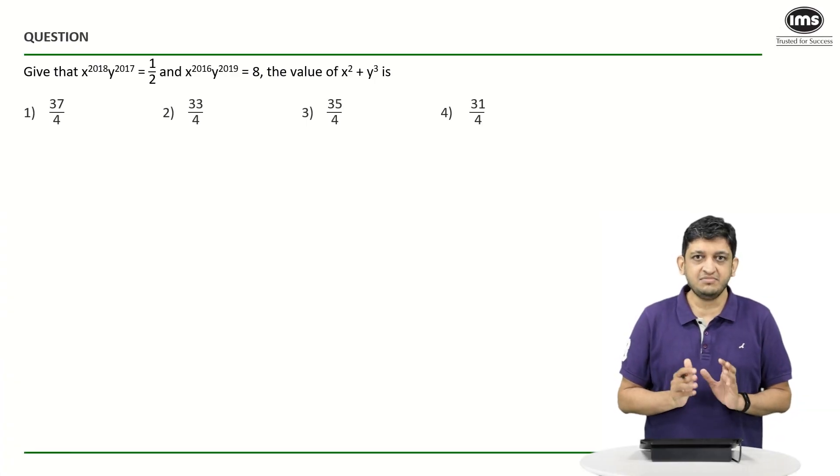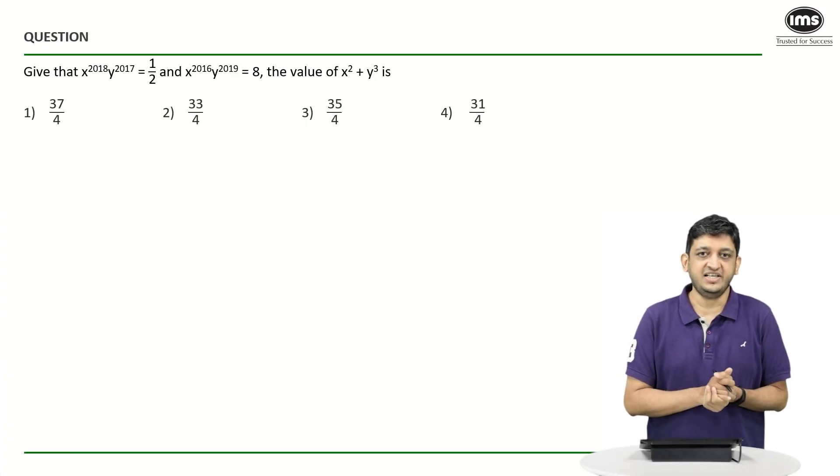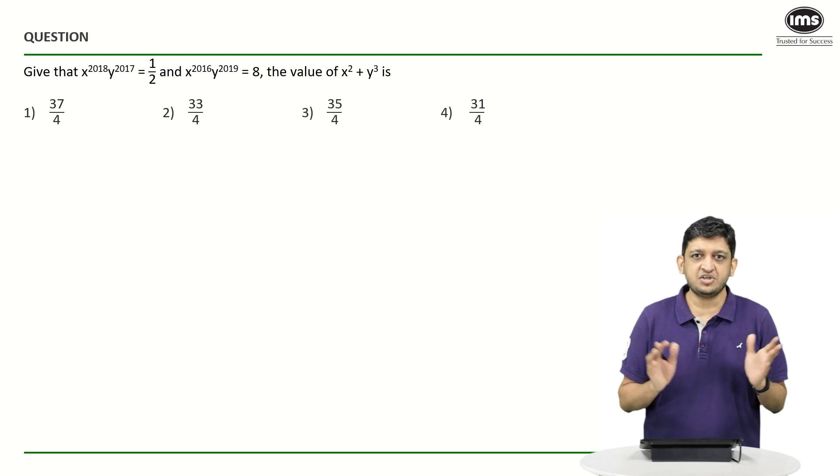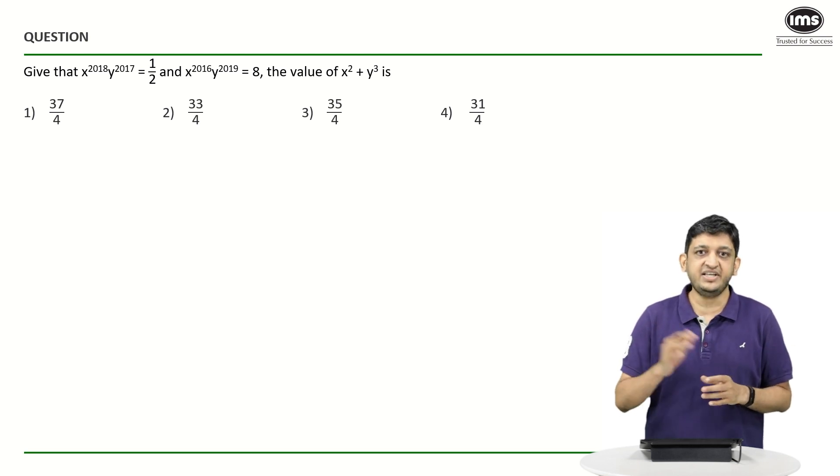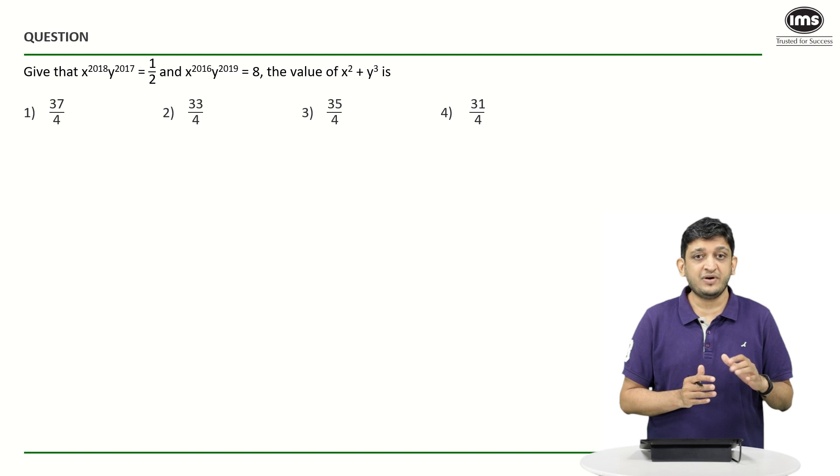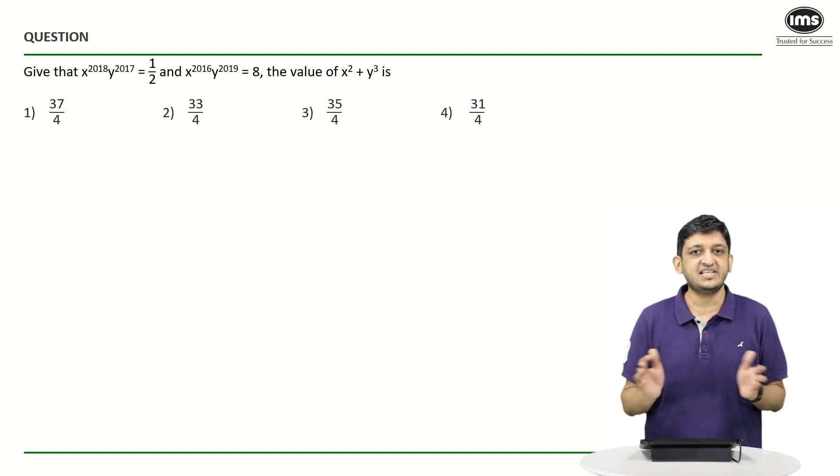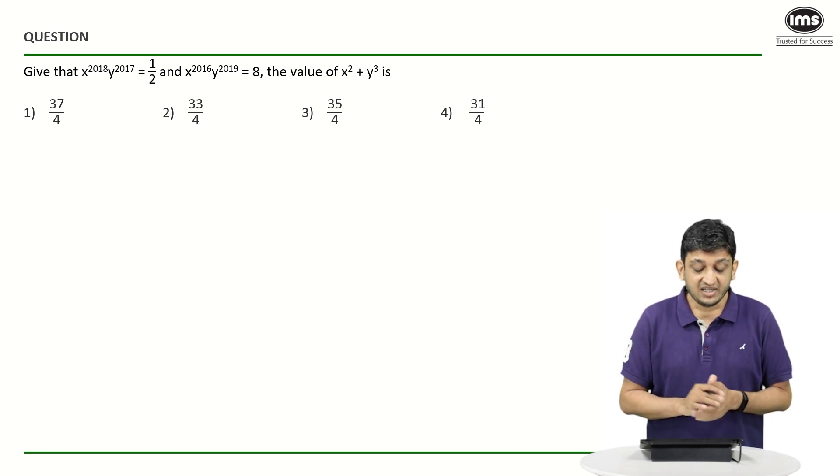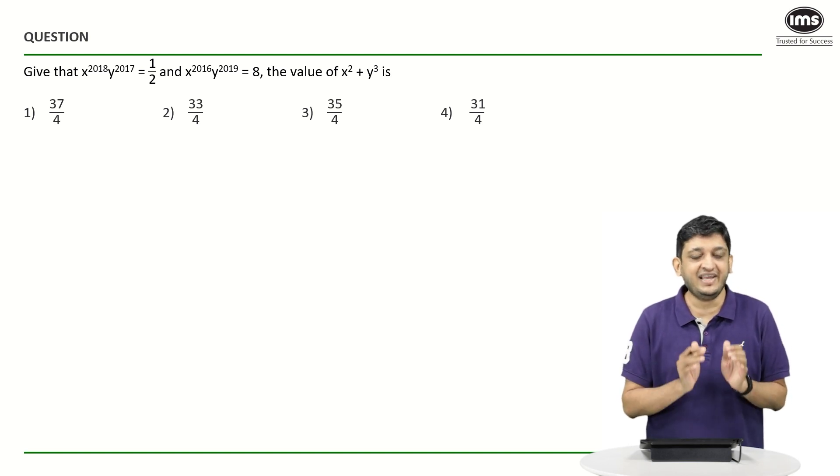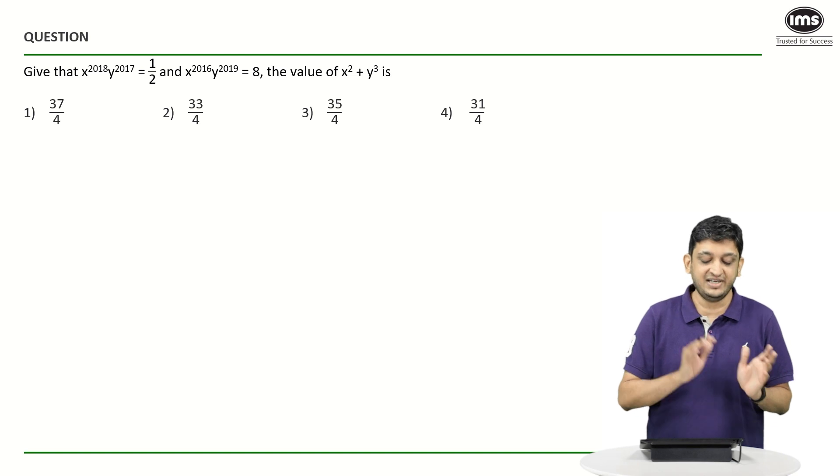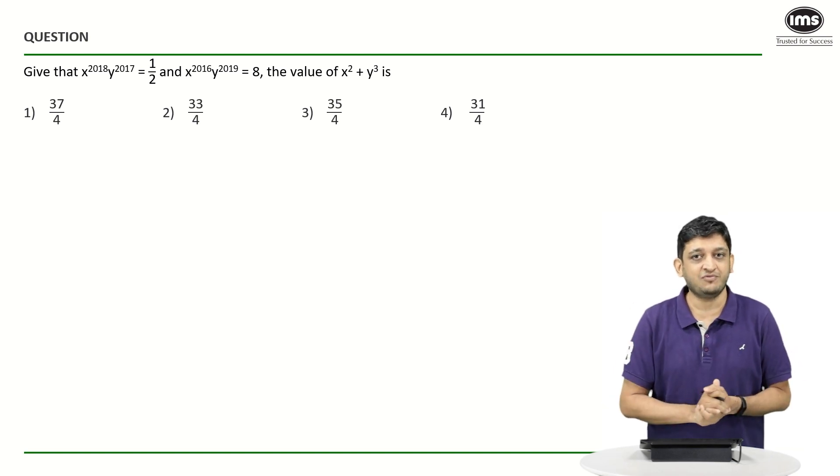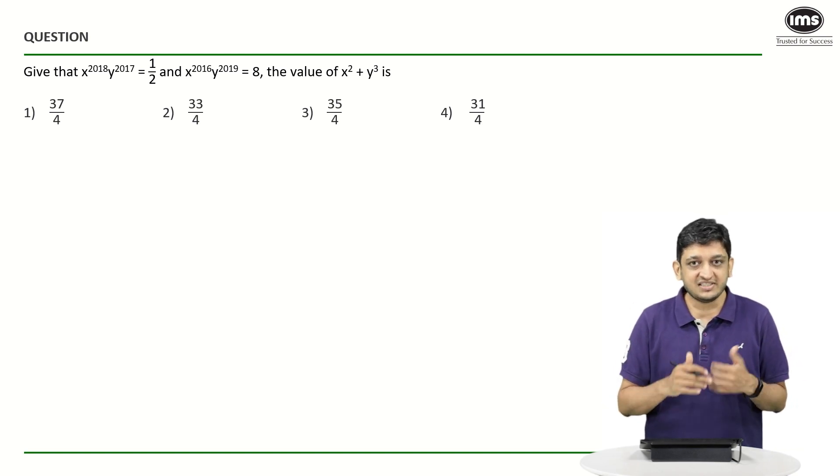If you look at the question, there are some really weird values we can see here. X to the 2018 is a huge number, Y to the 2017 is a large number, X raised to 2016, Y raised to 2019 - these are all big numbers. But the thing to understand here is that the paper setter would never expect you to calculate the exact values of X raised to 2016 and X raised to 2017.